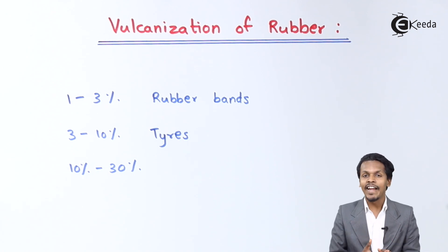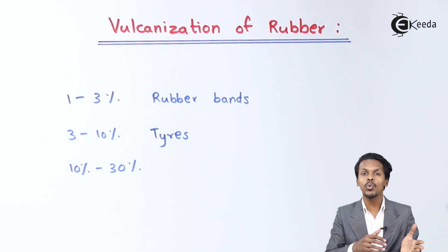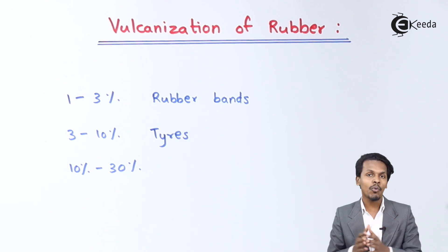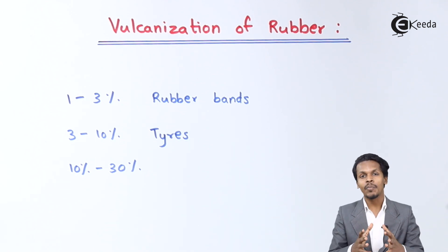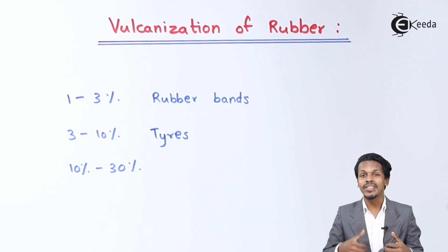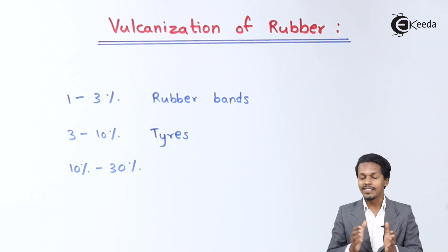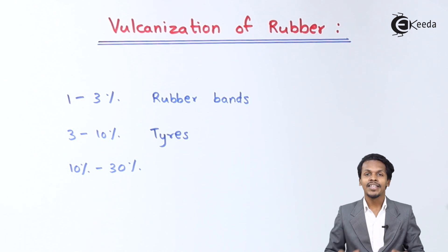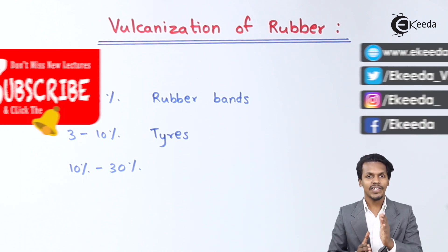This addition of sulfur helps to link the two linear polymers of rubber, making the rubber very much elastic. It will be very much helpful — if we apply force on it, the rubber will not lose its shape. That is the reason vulcanization is very much important.